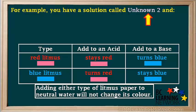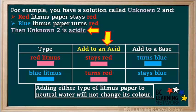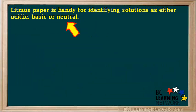Now we have Unknown 2. We add a piece of red litmus paper to it — the red litmus paper stays red. Next, we add a piece of blue litmus paper to it, and the blue litmus paper turns red. This would happen if Unknown 2 is acidic. Litmus paper is handy for identifying solutions as either acidic, basic, or neutral. If we look at the indicator table in the Science 10 data booklet, we'll see how litmus works.